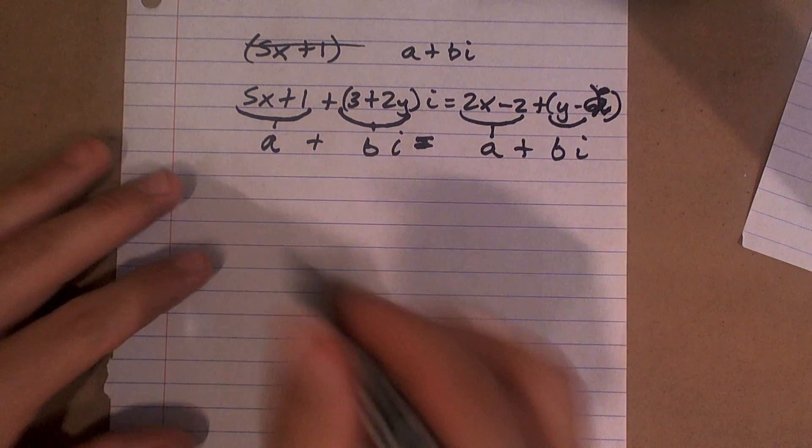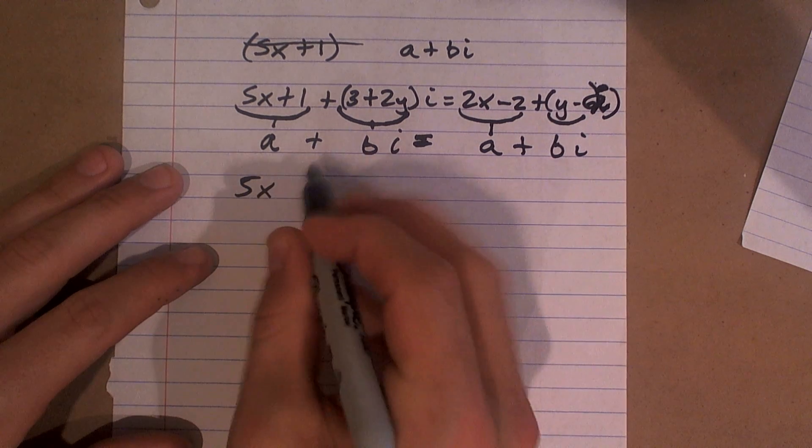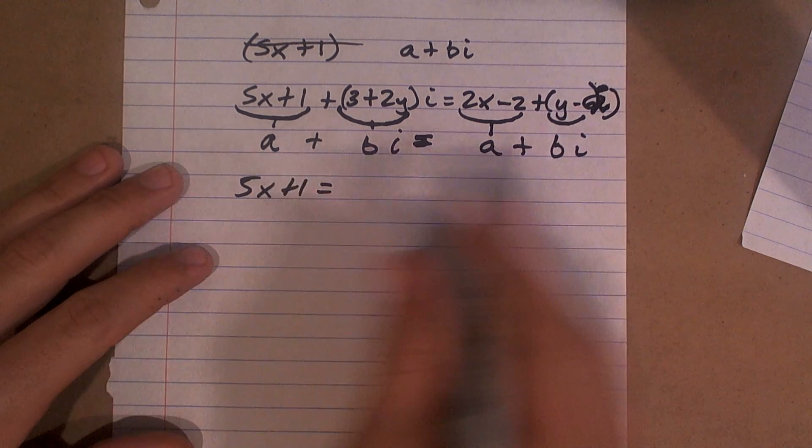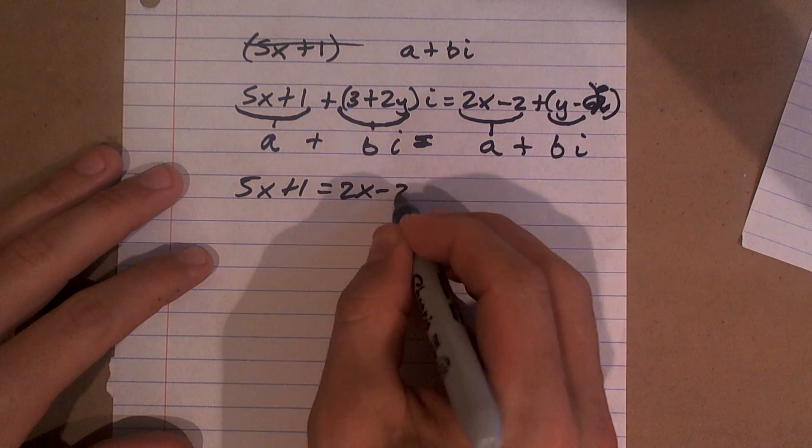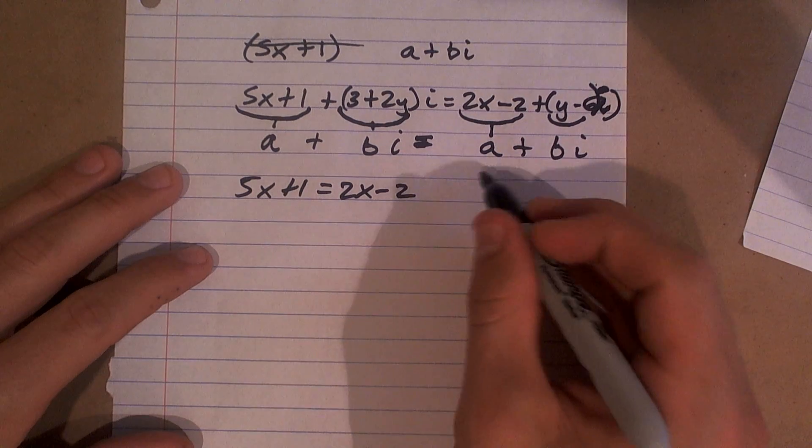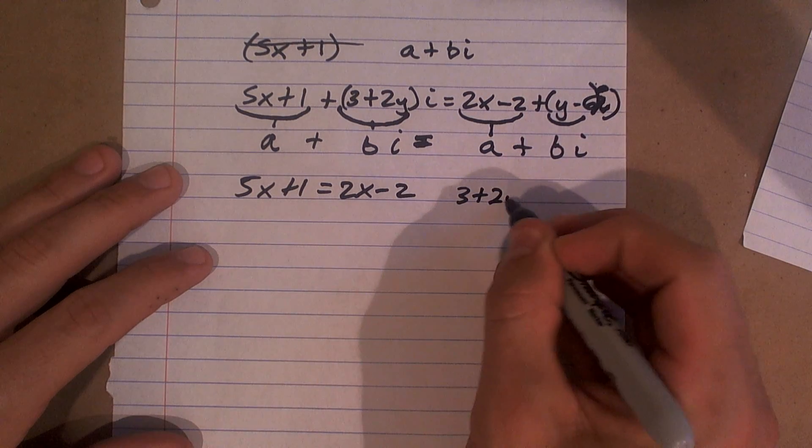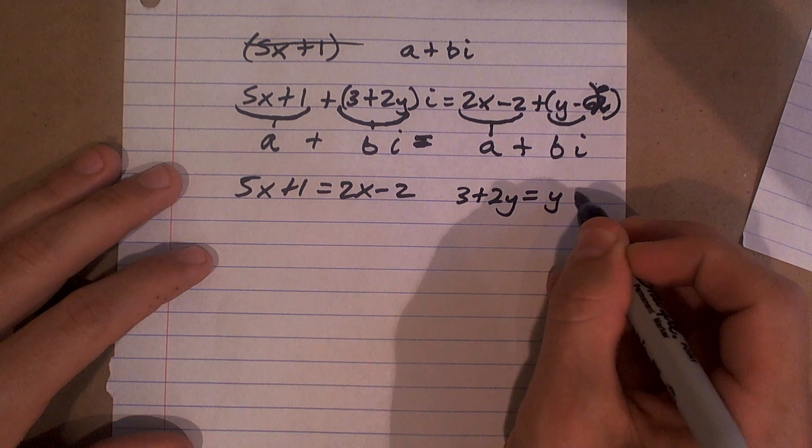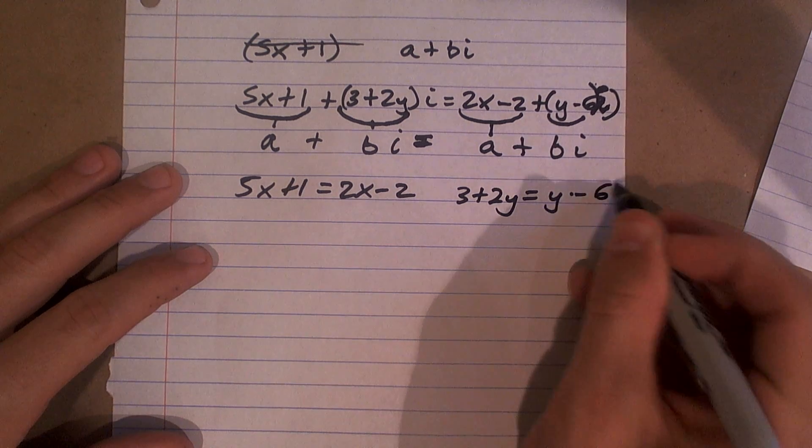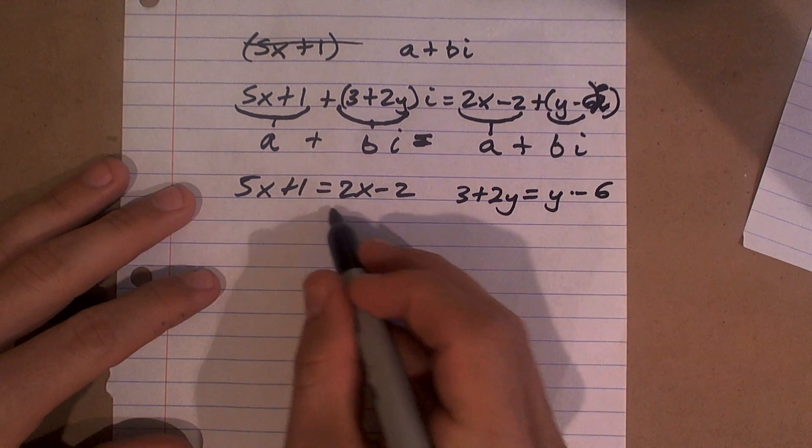So you got to have your a and your b and then all they're saying to do is just set them equal to each other. So I'm saying a has to equal 2x minus 2 for it to be true, and then your b which would be 3 plus 2y equals y minus 6, and then from here we just go ahead and solve.